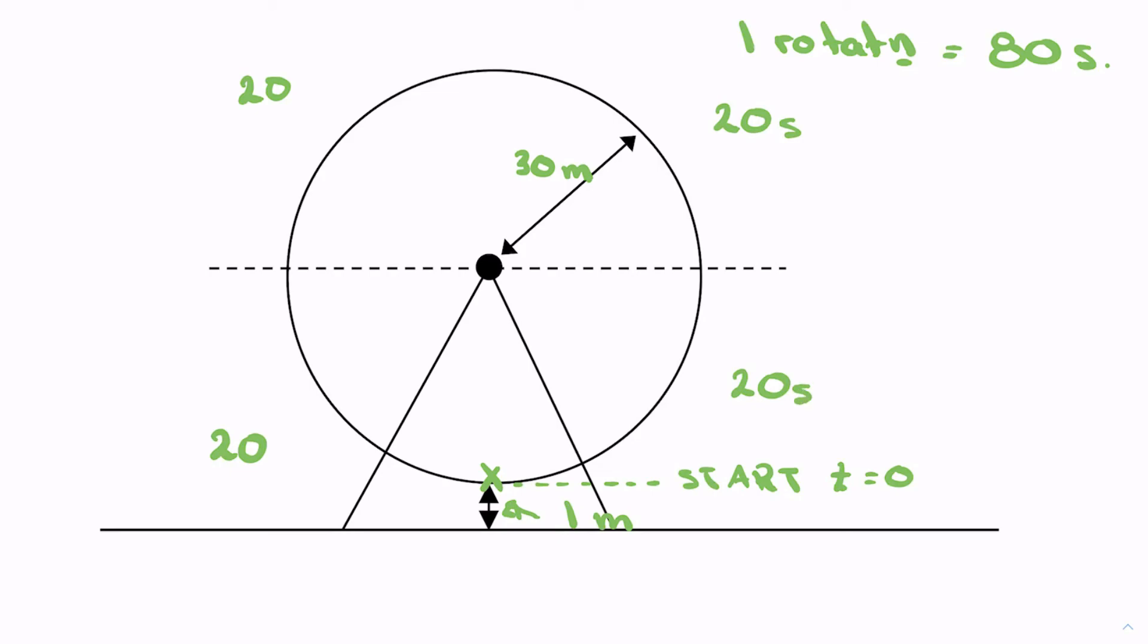That's seconds, seconds, seconds, seconds, and seconds. As for the height, well it starts at one meter. So at zero it's one meter. At this point it's going to be one meter plus the radius, so it'll be 31 meters.